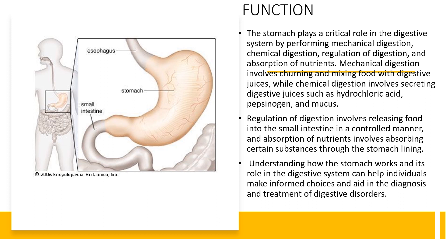The stomach plays a crucial role in the digestive system by performing several important functions. First, mechanical digestion: the stomach uses its muscular walls to churn and mix the food with digestive juices, breaking it down into smaller particles. This process, known as mechanical digestion, helps to increase the surface area of food particles, making it easier for digestive enzymes to break them down further.